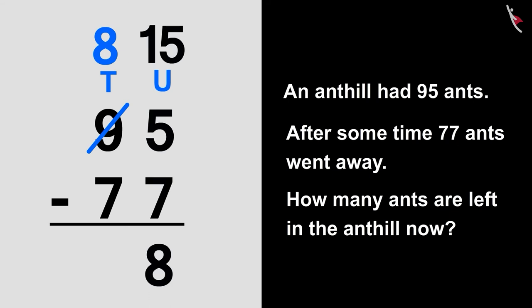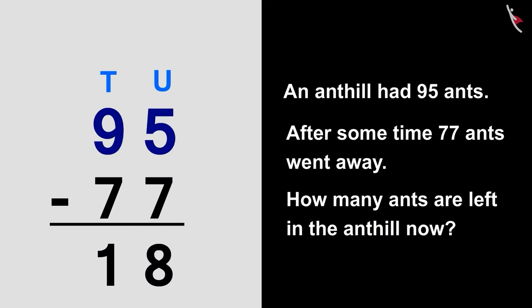Now, we will subtract the numbers 8 and 7 in tens column. 8 minus 7 is 1. We write here below the tens place like this. 95 minus 77 is equal to 18.